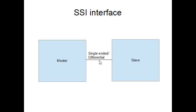In SSI we have one data line if it is single-ended, rather than separate in and out lines. That means this is not a full duplex system, whereas SPI is a full duplex system.